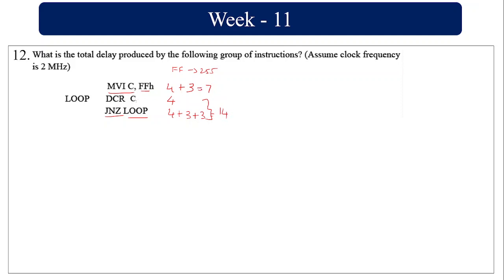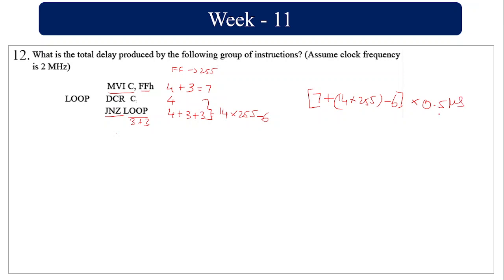In the last execution, when C becomes zero, JNZ condition fails and the loop exits — so the two memory reads for the address (6 T-states) are not executed. The total T-states = 7 + (14 × 256) − 6. With a clock frequency of 2 MHz, the period is 0.5 microseconds per T-state, giving a total delay of approximately 1.783 milliseconds.